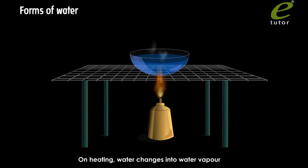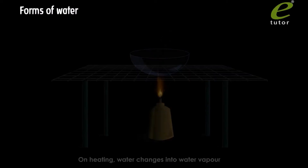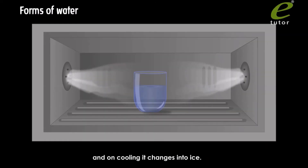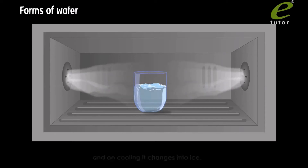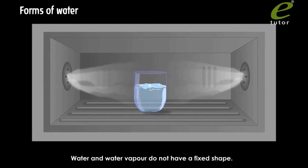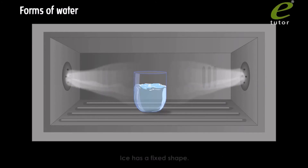On heating, water changes into water vapour. And on cooling, it changes into ice. Water and water vapour do not have a fixed shape. Ice has a fixed shape.